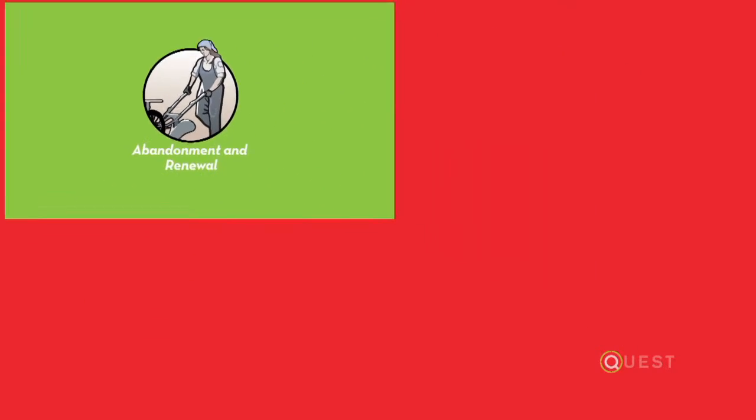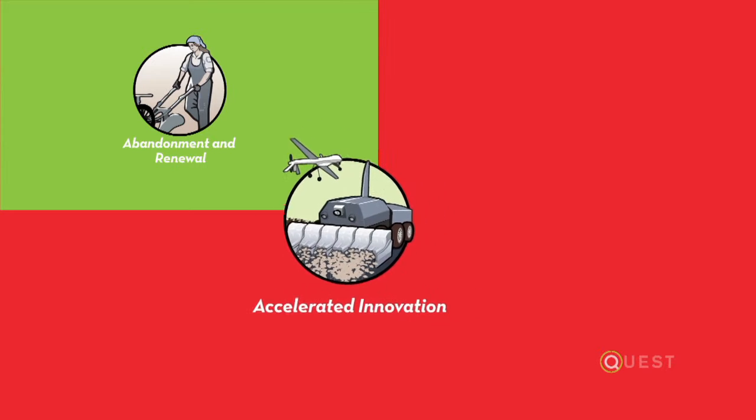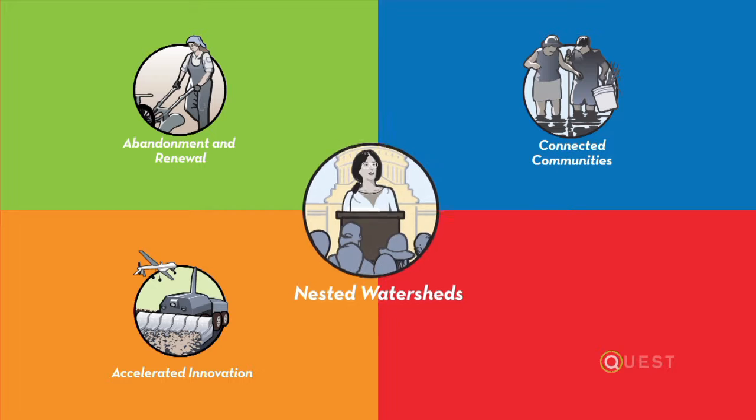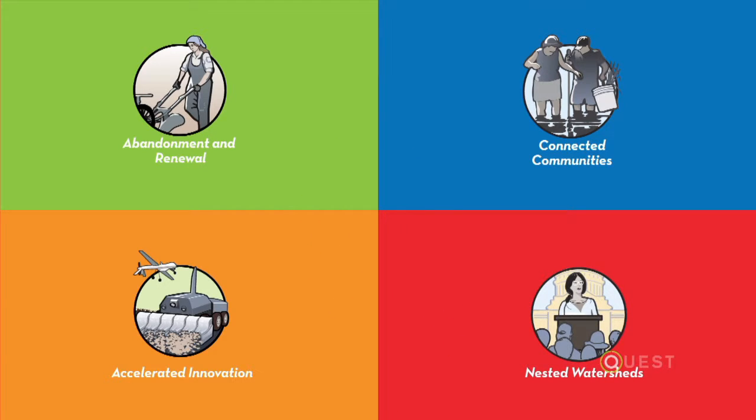So we're creating a set of four scenarios for the Ahara watershed, and each scenario looks at a distinct pathway of change in the area through the year 2070.